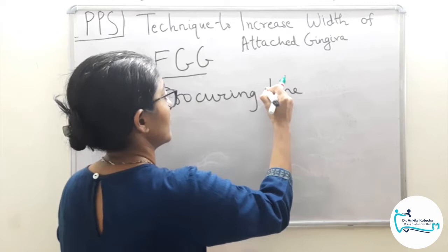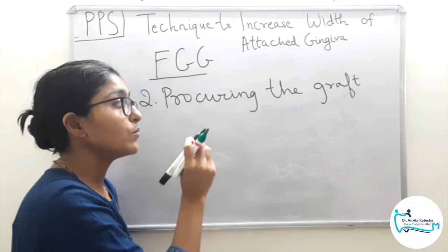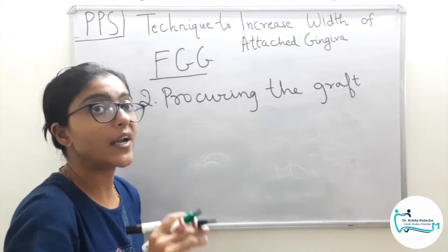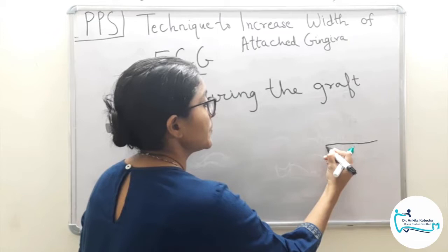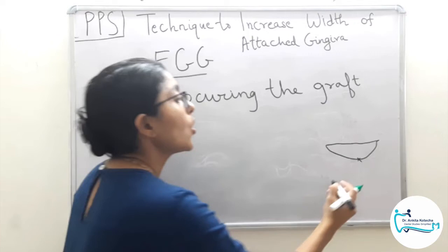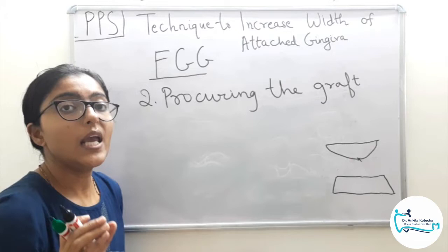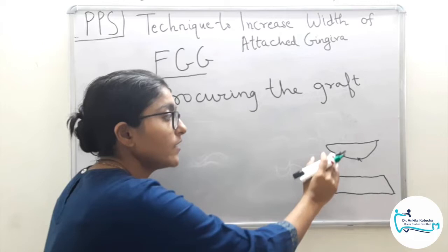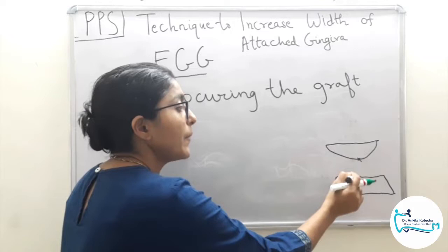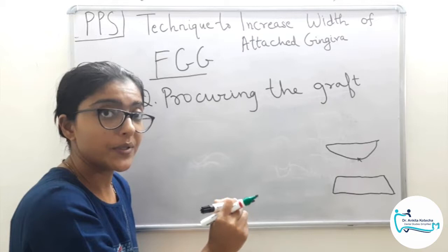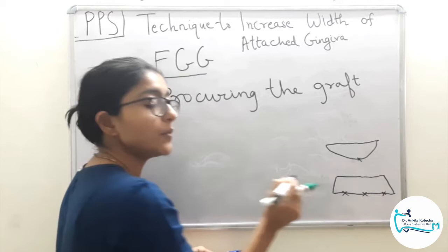Procuring the graft is one of the most crucial tasks — it cannot be a random site or random dimension. The recipient bed dimensions are recorded on a sterile aluminium foil placed as a template over the prepared site, recording its shape and size. The most common site of graft procurement is the palate — distal to the anterior rugae — because this area has the widest zone of attached gingiva. A thorough knowledge of anatomy, tissue nature, and innervation is essential before assessing the site.